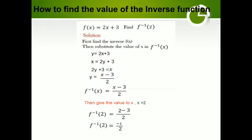So we have to find f inverse of x first. Start like that: f of x is equal to 2x plus 3. Replace f of x into y: y equal to 2x plus 3. Swap. Then find. So we got y is equal to x minus 3 divided by 2. So f inverse x is equal to x minus 3 divided by 2. Here we got f inverse. Look at our question: find f inverse 2. Now you can replace the value 2 in our equation, giving x equal to 2.